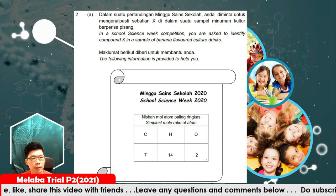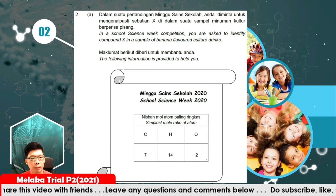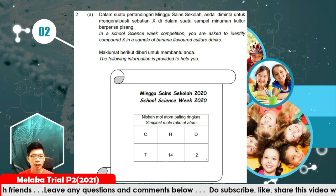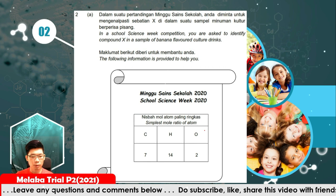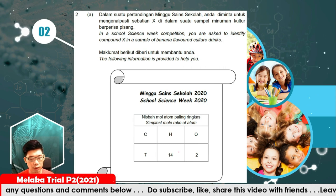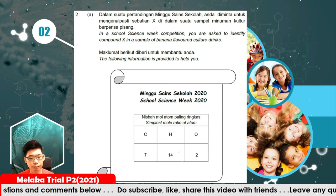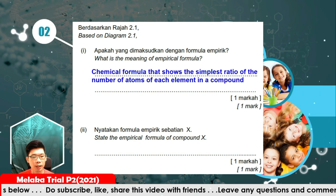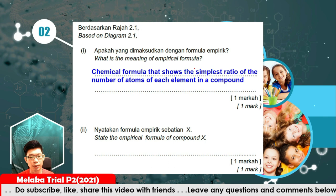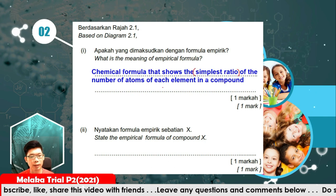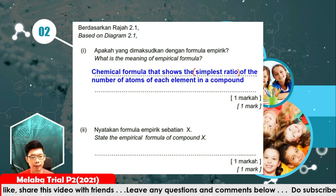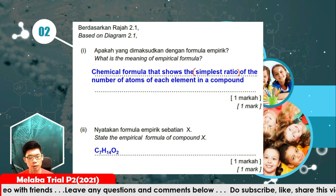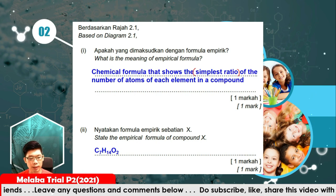Question number 2. In a school science week competition, you are asked to identify compound X in a sample of Cardano flavor culture drinks. The simplest mole ratio: carbon is 7, hydrogen is 14, oxygen is 2. The empirical formula refers to the formula that shows the simplest ratio of the number of atoms for each element in the compound. So the empirical formula for compound X is C7H14O2 because it cannot be simplified anymore.